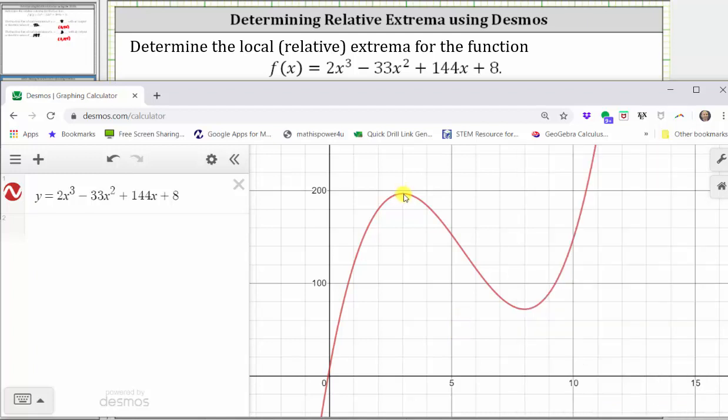We can see the high point here, which represents the relative maximum, and we can also see the low point here, which represents the relative minimum.